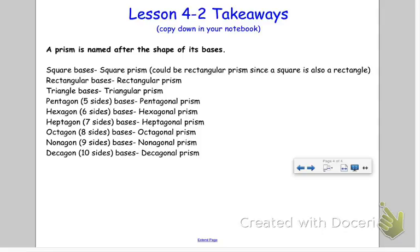Rectangular bases would be a rectangular prism. If you have triangle bases, then you have a triangular prism. Pentagon bases, so if you have five sides, you have a pentagonal prism. We talked about a hexagonal prism.